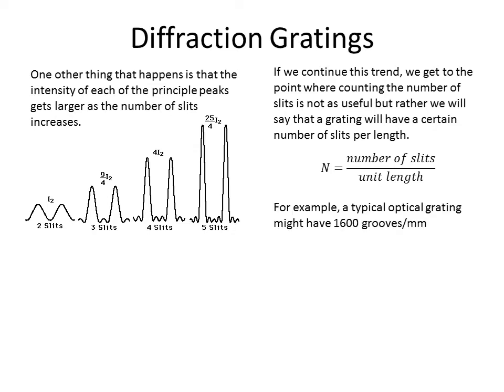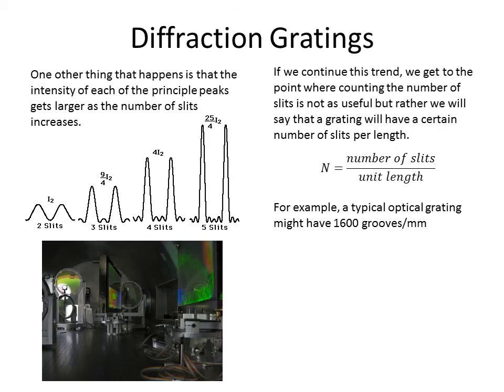A typical example is 600 grooves per millimeter. This is shown in a picture of the Texas Petawatt laser, where mirror gratings — which reflect rather than transmit, but work on the same idea — have 600 grooves per millimeter. So for every millimeter there are 600 small slits, giving interference patterns similar to what we described but with many more slits.